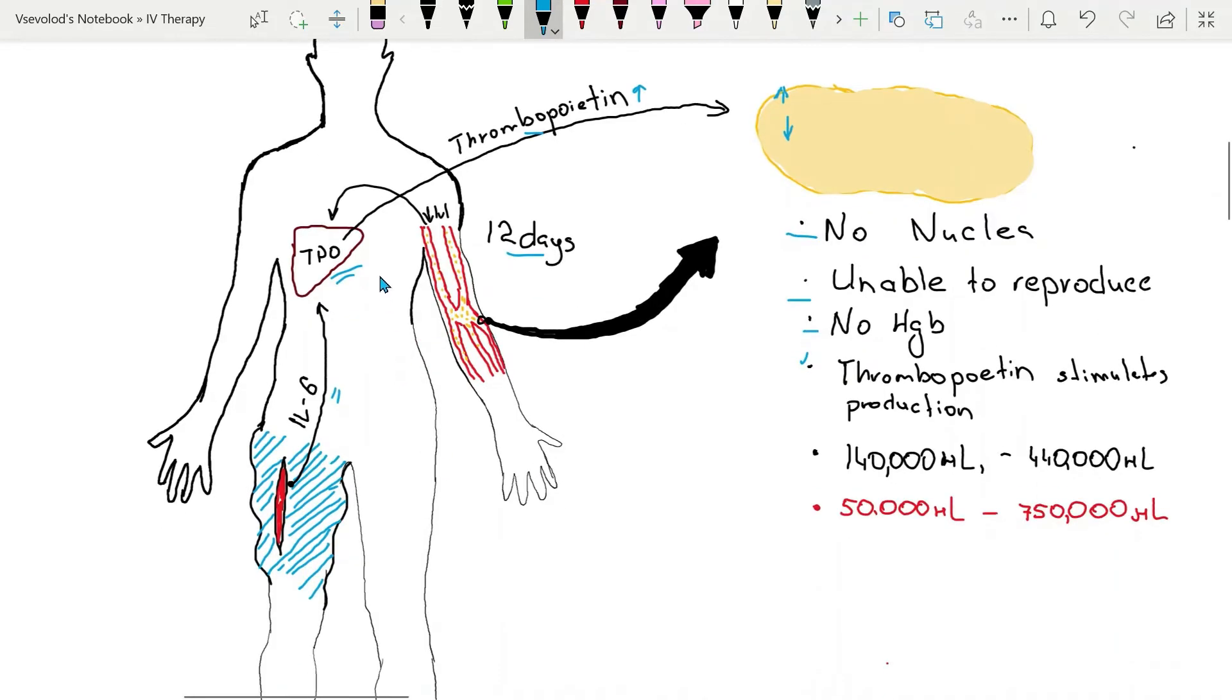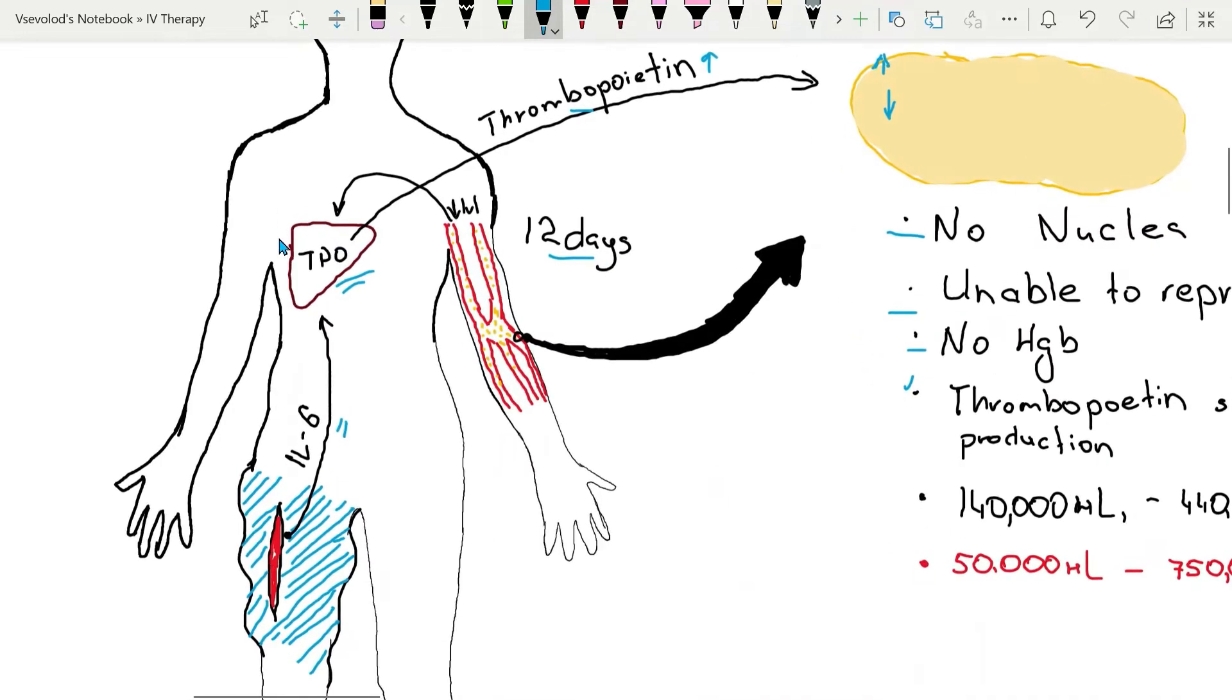Also, in the body there is a negative feedback loop to regulate platelet production. When platelet count is low, liver is stimulated to produce thrombopoietin.